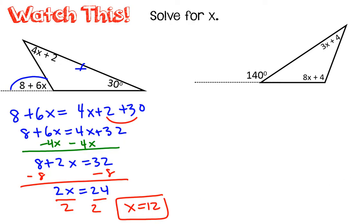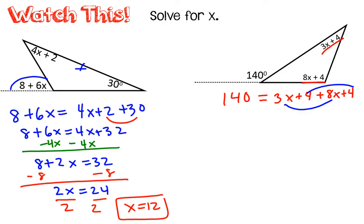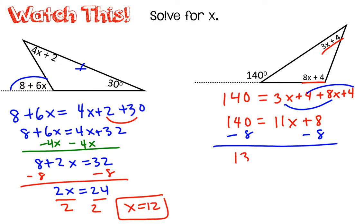How about this second one? The exterior angle is equal to the sum of the two interior angles. This side has too many terms, so I'm going to add these together. So 140 is equal to 11x plus 8. Minus 8 from both sides, then divide by 11. So x is equal to 12.